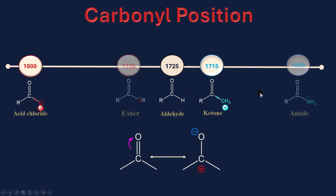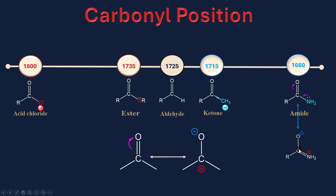For amide and esters, why does amide have an extremely lower wavenumber compared to others? Because the lone pair on nitrogen starts the resonance, which decreases the double bond character, so the wavenumber reduces.